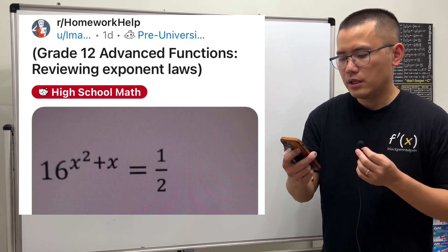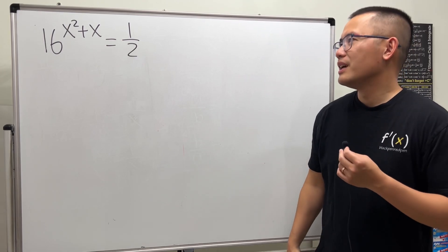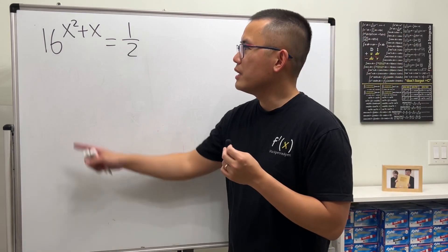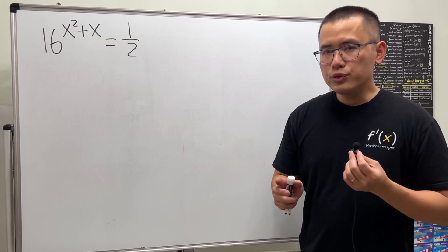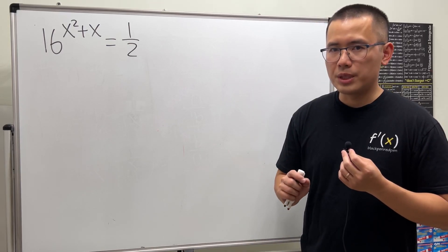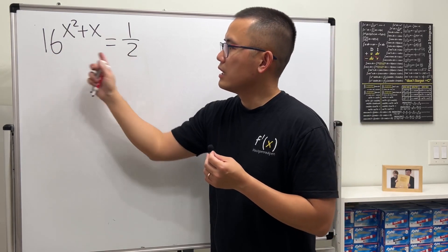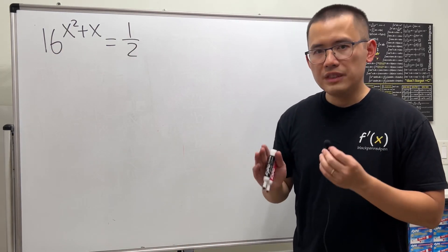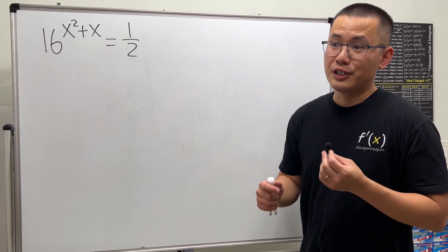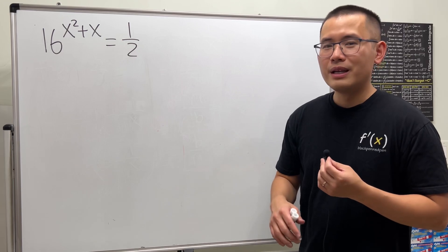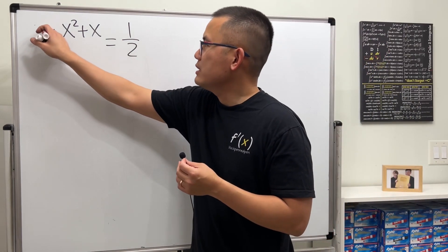Grade 12 advanced functions — reviewing exponent laws. We have an exponential equation because the x is in the exponent. There are two ways to keep in mind. The first way: ask yourself, can you make both sides have the same base? If so, do it. If not, check out my other video — you will have to use logarithm. For this one, let's look at 16.